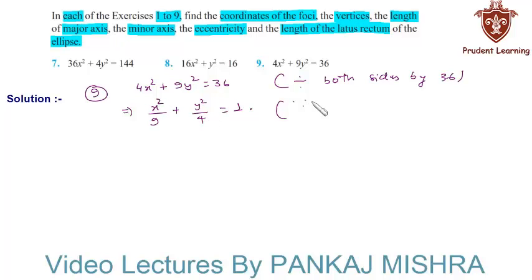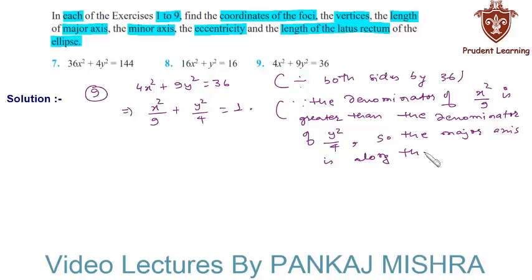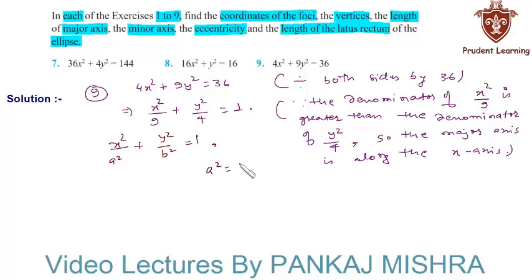Now since the denominator of x²/9 is larger than the denominator of y²/4, the major axis is along the x-axis. Comparing the given equation with the standard form of an ellipse whose major axis is along the x-axis, that is x²/a² + y²/b² = 1, here we see that a² = 9 and b² = 4, which implies a = 3.